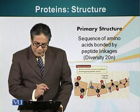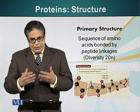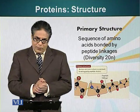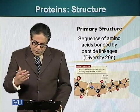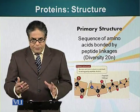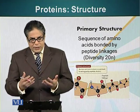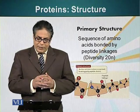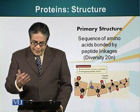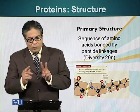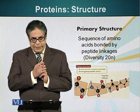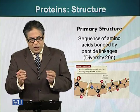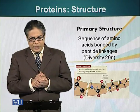The primary structure, as I mentioned, is basically the result of these peptide bonds — the sequence of different amino acids in a protein molecule. The diversity of different combinations we can form by linking amino acids is very great. For example, if we want to link two amino acids together, we can have 400 different combinations.